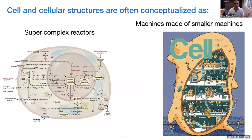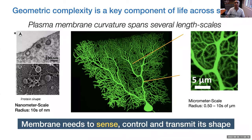When we talk about cells, typically the conceptual point of view is that a cell is a really complicated reactor with a bunch of very complicated reaction pathways. Or more recently, we think of a cell as a machine made out of smaller machines. But to a lesser degree appreciated is how geometrically complex cells and cellular structures can be.